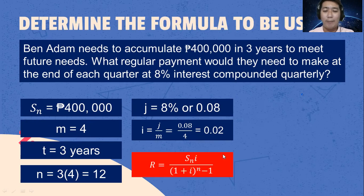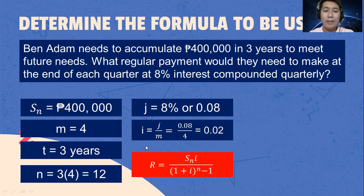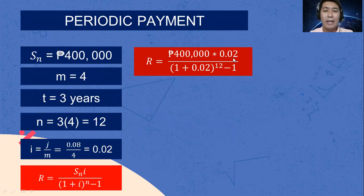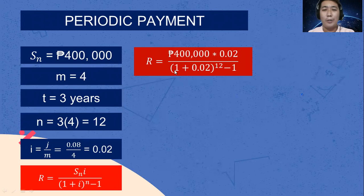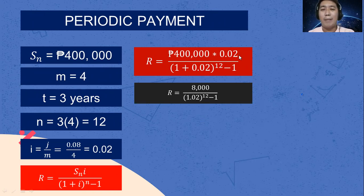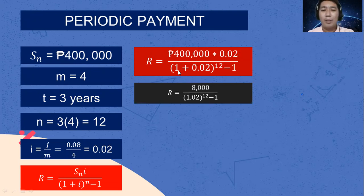The formula is R equals S sub N multiplied by I over the quantity of 1 plus I raised to N minus 1. Substituting: 400,000 times 0.02 divided by 1 plus 0.02 raised to 12 minus 1. On the numerator, 400,000 multiplied by 0.02 equals 8,000. On the denominator, 1 plus 0.02 equals 1.02.